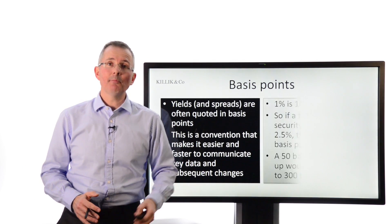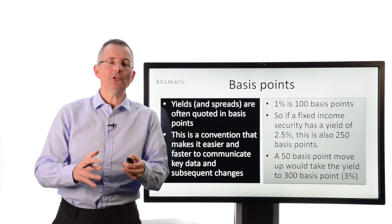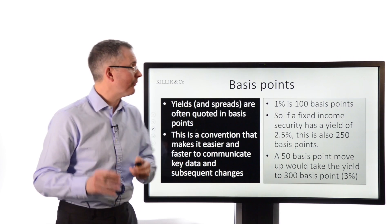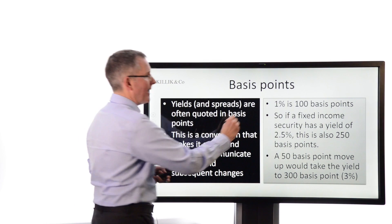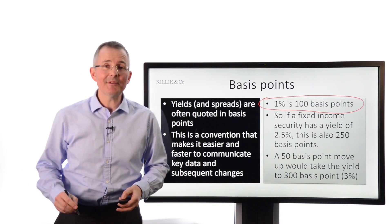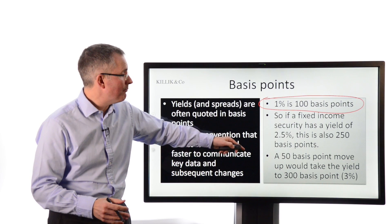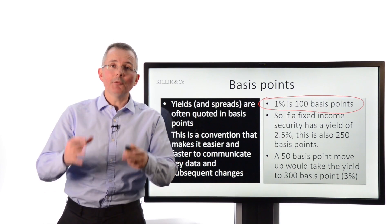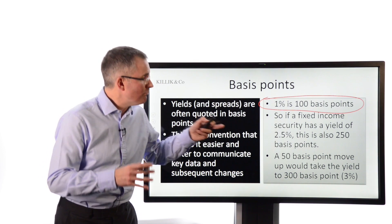A word about how these things are actually quoted: basis points. Often what confuses people is that the gap between two yields isn't expressed as a percentage — it's expressed in basis points. It's a very simple system: 1% equals 100 basis points. So if a fixed income security has a yield of 2.5%, another way of saying that is 250 basis points. A 50 basis point move is equivalent to 0.5%, taking you from 2.5% to 3%.